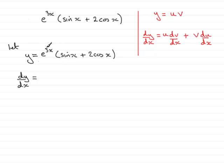So e to the 3x is going to be my u and v is going to be this bracketed expression sine x plus 2 cos x.